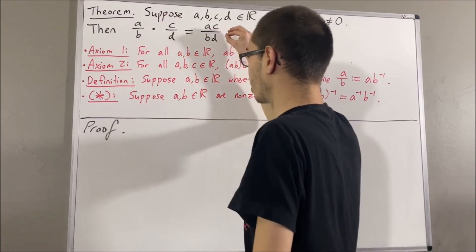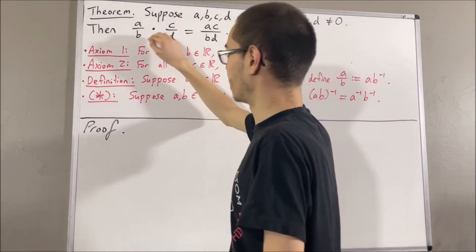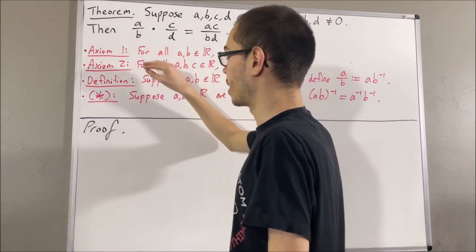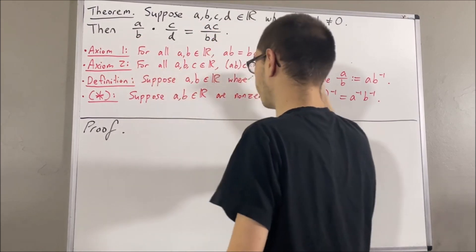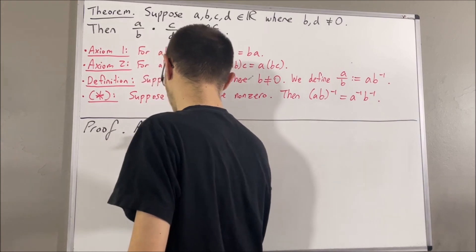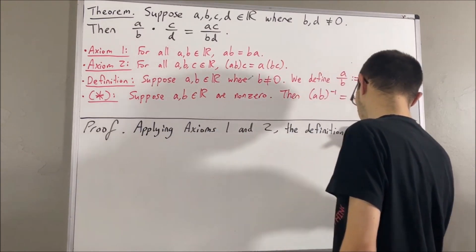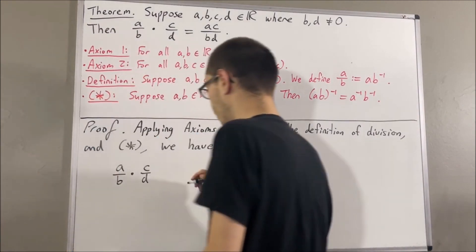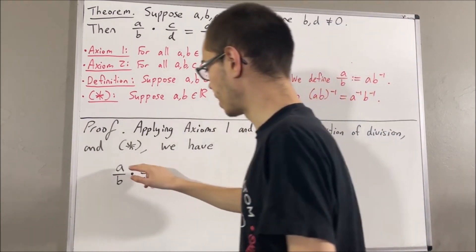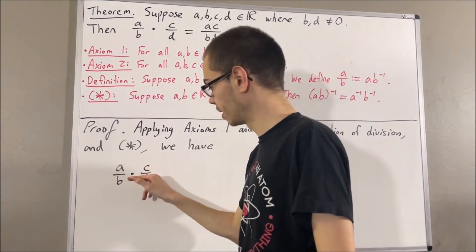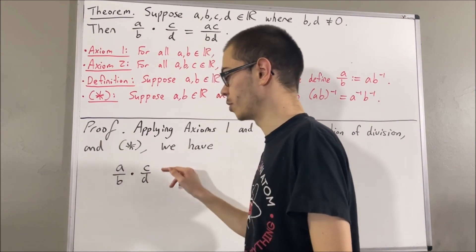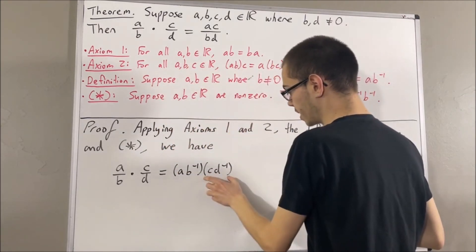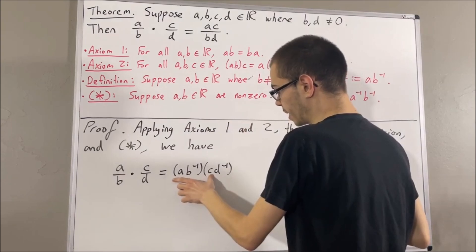To prove this, we are going to establish a chain of equalities showing that these expressions are equal, by applying axioms 1 and 2, the definition of division, and the result labeled star. First, by definition of division, A over B equals A times the reciprocal of B, and C over D equals C times the reciprocal of D. Then, applying axiom 2, we can move the parentheses around A times the reciprocal of B times C.